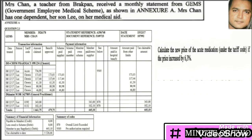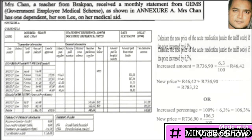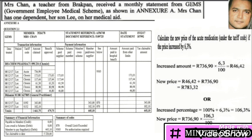Calculate the price of the acute medication under the tariff code if the price increased by 6.3%. Looking at the transactions listed under the pharmacy heading, the first is acute medication with an amount of 736.90. There are two ways to do this. The first approach: find 6.3% of 736.90, then add that amount to 736.90 to arrive at the new price inclusive of the 6.3% increase.